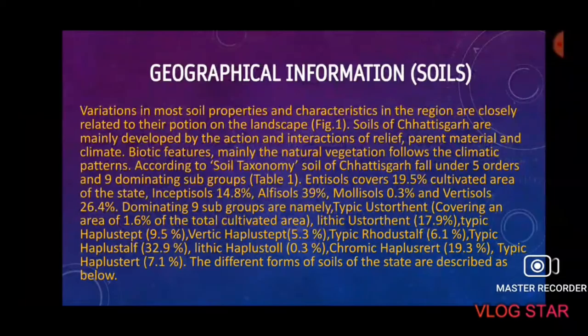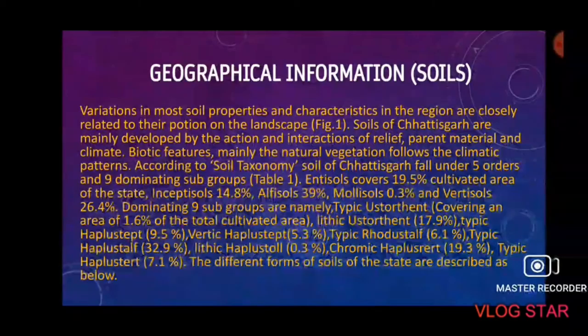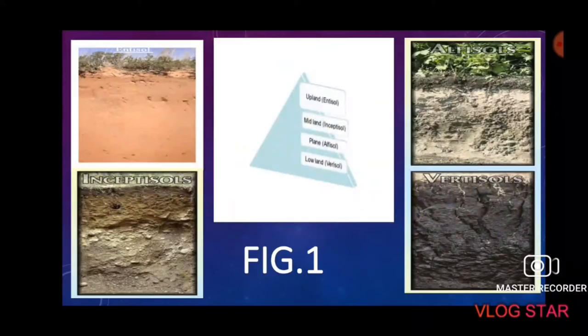Entisols cover 19.5% of the cultivated area of the state, Inceptisols 14.8%, Alfisols 13.9%, Mollisols 0.3%, and Vertisols 26.4%. The nine dominating subgroups include Typic Ustorthents covering 1.6%, Lithic Ustorthents 17.9%, Typic Haplustalfs 9.5%, Vertic Haplustalfs 5.3%, and others ranging from 0.3% to 32.9%. The different forms of soil of the state are described further in the next slide.